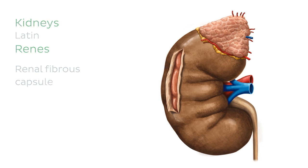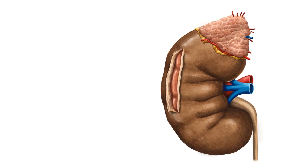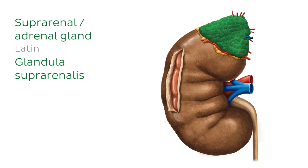Also seen from this view, at the superior pole of each kidney is an endocrine gland enclosed in a fibrous capsule and a cushion of perirenal fat called the suprarenal or adrenal gland, which we highlighted here. These glands are not part of the urinary system and function instead as part of the endocrine system. Don't forget that.